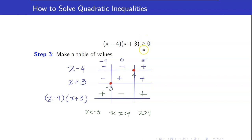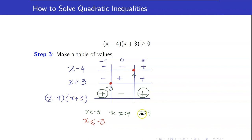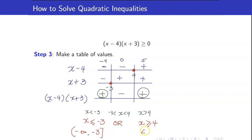Going back to our original inequality, we want the product (x minus 4)(x plus 3) to be greater than or equal to zero — we want it to be positive or zero. The intervals where the product is positive are x less than negative 3 and x greater than 4. We include negative 3 and 4 because the inequality allows the product to equal zero. In interval notation, the solution is negative infinity to negative 3 union 4 to positive infinity.